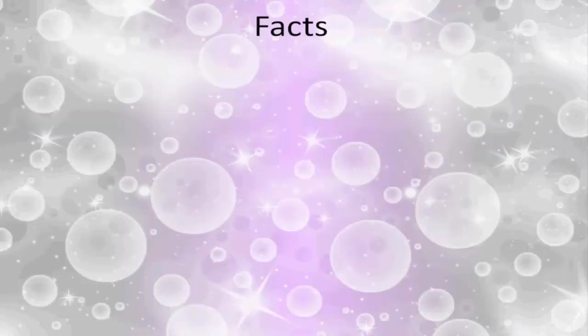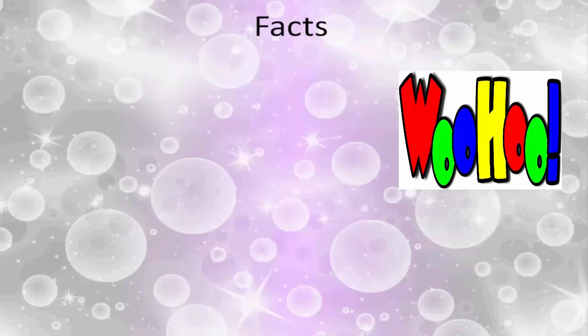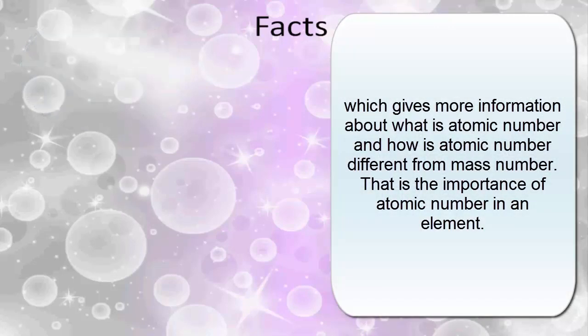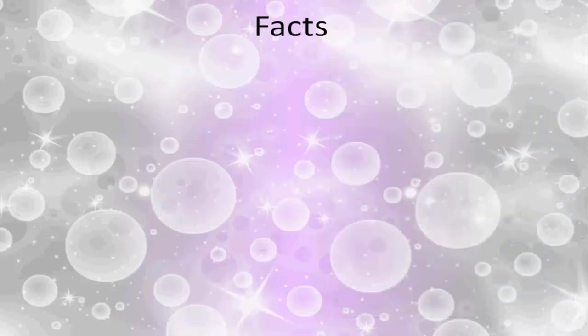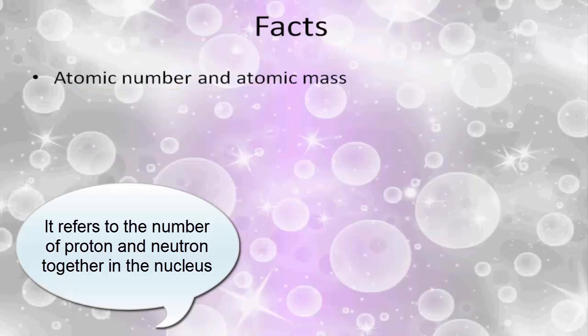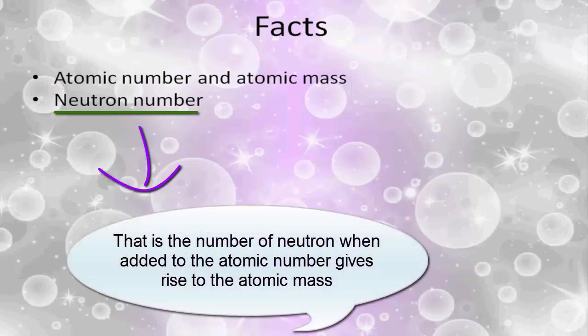Let's understand now the facts and figures of the atomic number. First we shall understand atomic number and atomic masses. Atomic number is often wrongly confused with the atomic mass number, which refers to the number of protons and neutrons together in the nucleus. Second basic fact is that the neutron number, that is the number of neutrons, when added to the atomic number gives rise to the atomic mass.